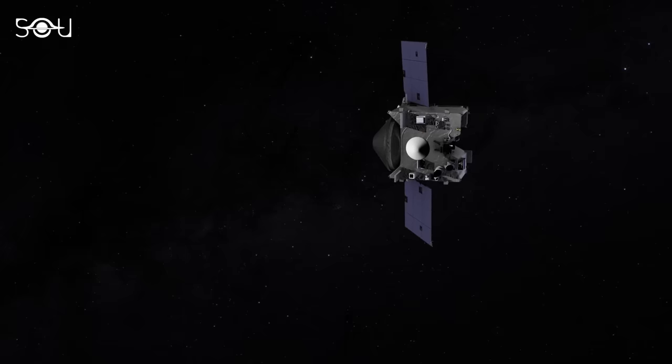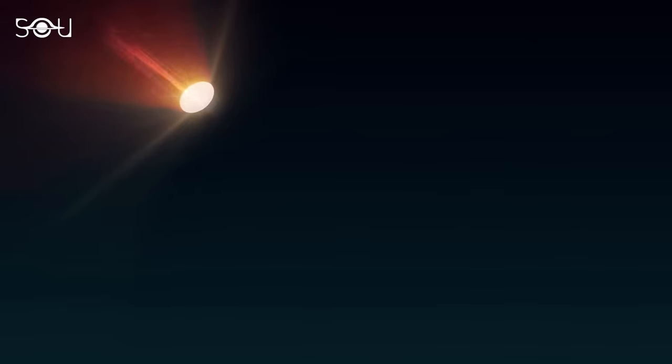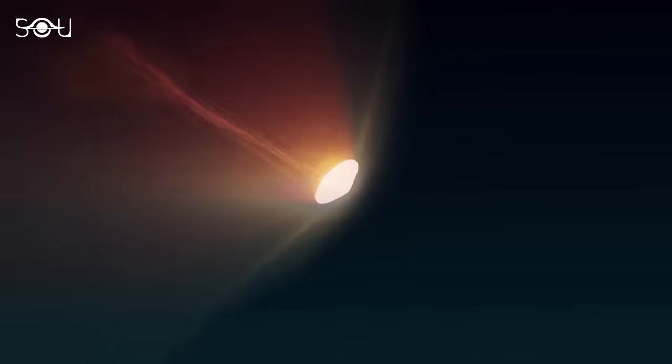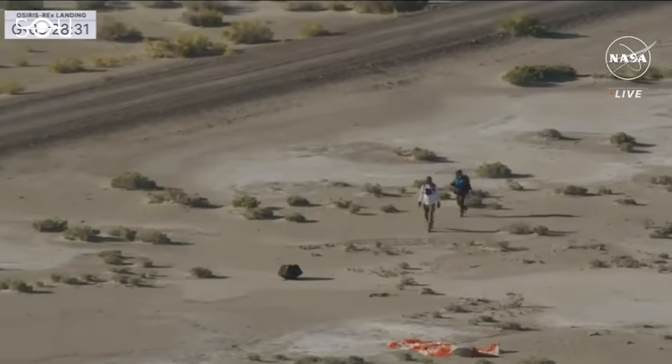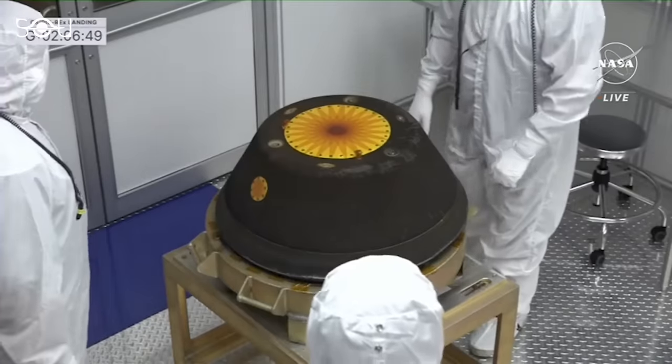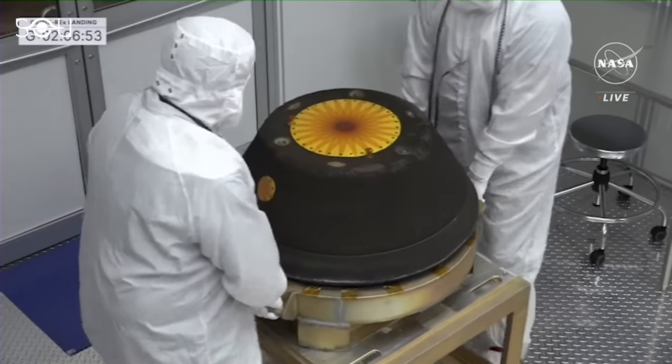The spacecraft released a capsule containing fragments of Bennu into Earth's atmosphere, and this capsule then descended via parachute, landing in Utah, where the mission team eagerly awaited to recover the samples. The Bennu sample is the largest asteroid sample ever brought back to Earth.